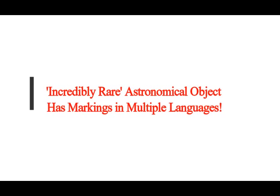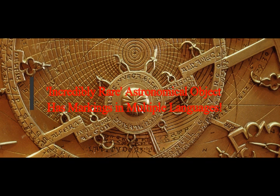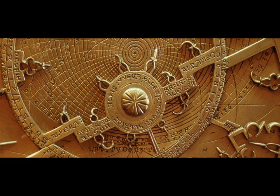An incredible, rare astrolabe—an astronomical object that has markings in multiple languages—has been discovered entirely by accident. The medieval astronomical instrument has turned out to be a powerful record of cross-cultural scientific collaboration. The brass astrolabe dates back to 11th century Spain but was subsequently engraved with annotations and amendments over the centuries in multiple languages as changing owners adapted and updated it for their own use.